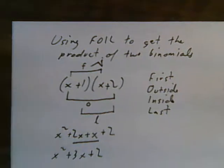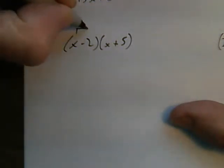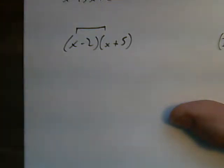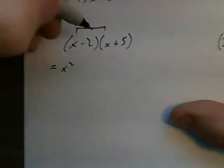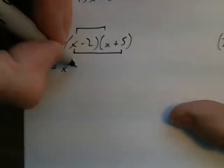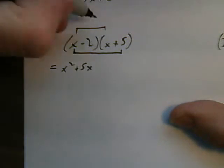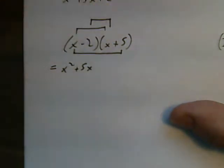Let's try another example: (x - 2)(x + 5). First, x times x is x squared. Outside, x times plus 5 is plus 5x. Inside, negative 2 times x is negative 2x.